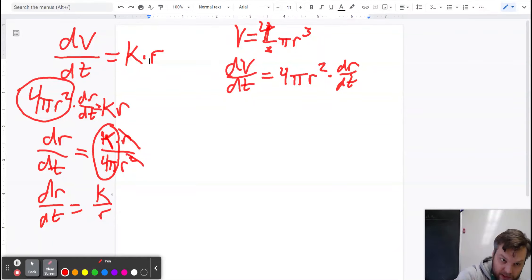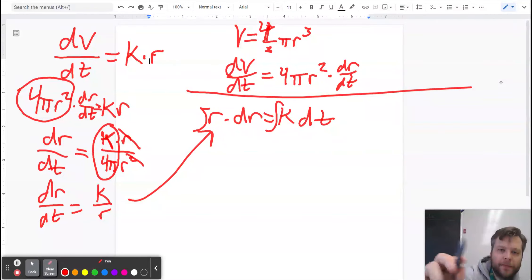Alright, now we're going to solve this differential equation by separating our variables. So dr times r equals k times dt. Integrate, integrate. Here, let me draw a little line.